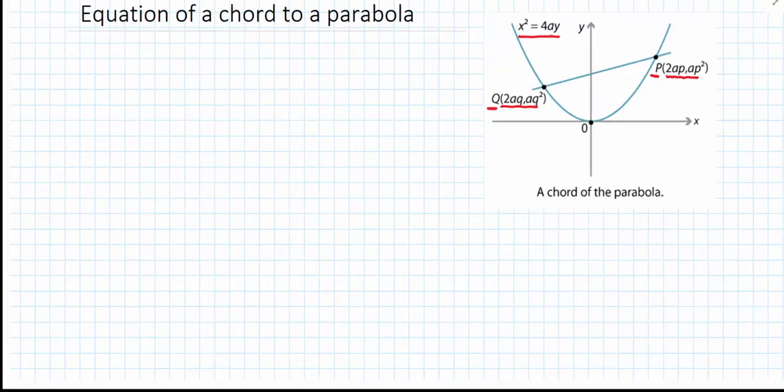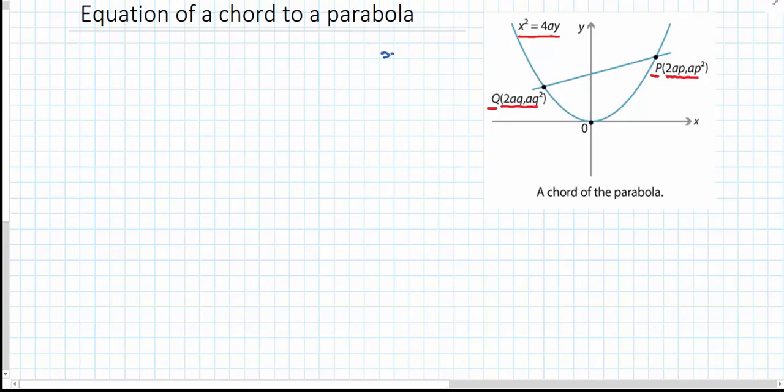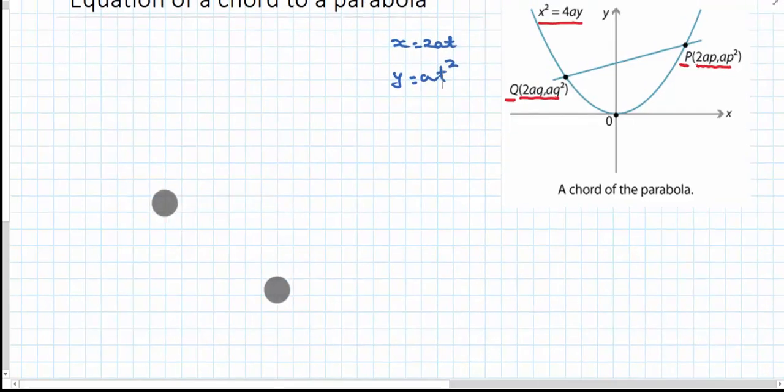A quick reminder that the parametric equation for this parabola is x equals 2at and y equals at squared, where t is the gradient at any point.